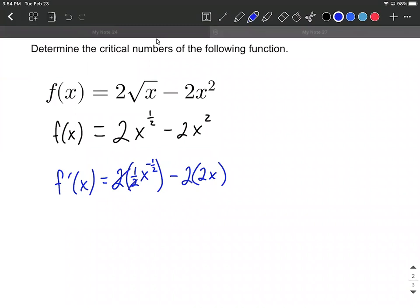Two times one half can simplify to make a one, and we still have x to the negative one half power. I'm going to rewrite this without the negative exponent. So it's one over x to the positive one half power minus four x.